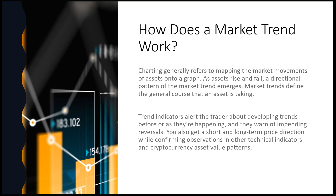Charting generally refers to mapping the market movements of an asset on a chart. An asset rises and falls, and a directional pattern of the market trend emerges. Market trends define the general course the asset is taking. Trend indicators alert traders about developing trends before or as they are happening. They warn of impending reversals and give short and long-term price predictions while confirming observations in other technical indicators — for cryptocurrencies, Forex, commodities, gold, oil, whatever you're trading, especially short-term assets.